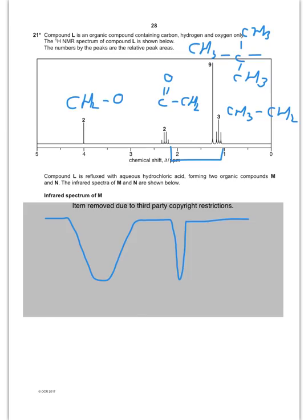Okay, so they're giving me compound L, and it contains carbon, hydrogen, and oxygen only. They're giving me the NMR spectrum and the number of peaks. They tell me that compound L is refluxed with HCl, and it forms two compounds, M and N. Now, on the paper they've removed it, but this is pretty much what the infrared spectrum of M would look like. And M obviously contains an OH group there, and it contains a C double bond O, and this is very broad. So, M is a carboxylic acid.